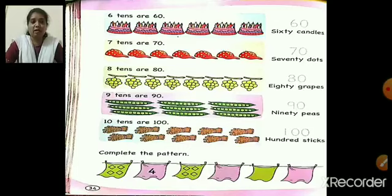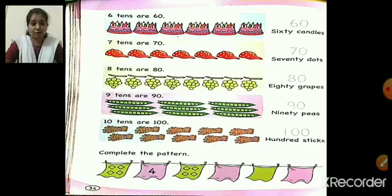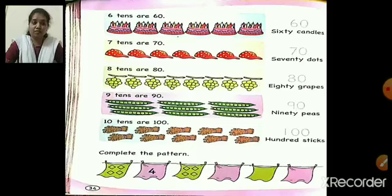Seven 10s are 70. Seven 10s because we have 7 caps, and 70 because we have 10 dots on each cap. So if you add 10 seven times we get 70. Trace 70.